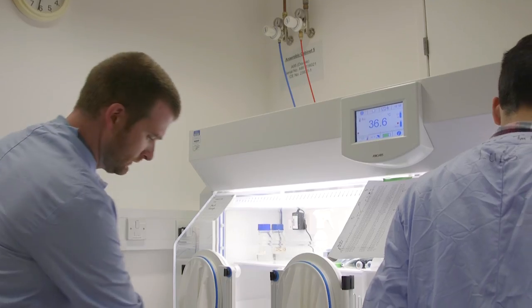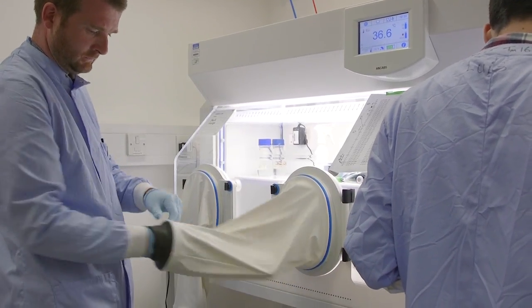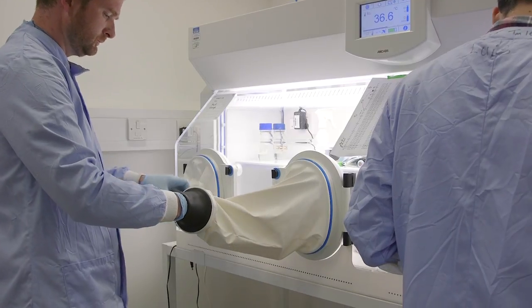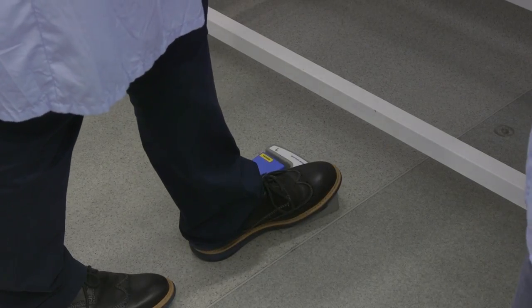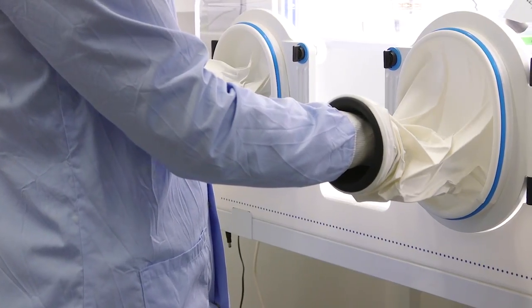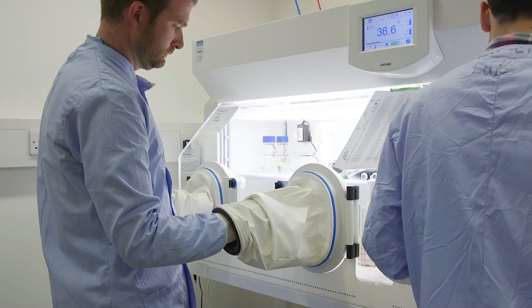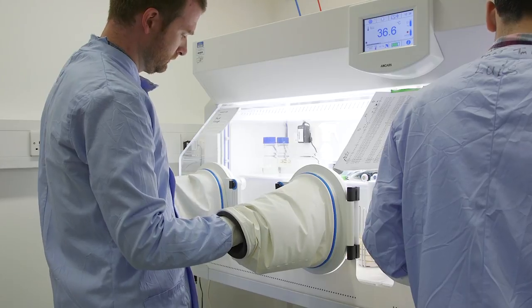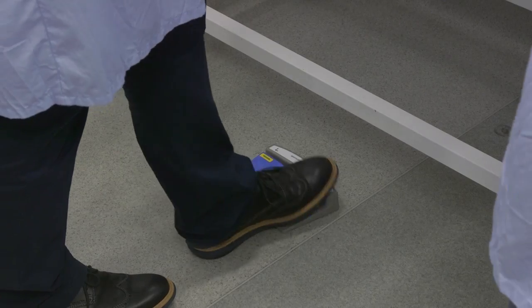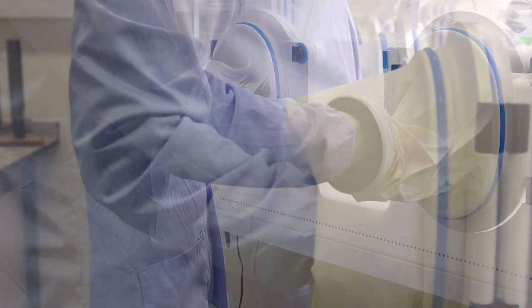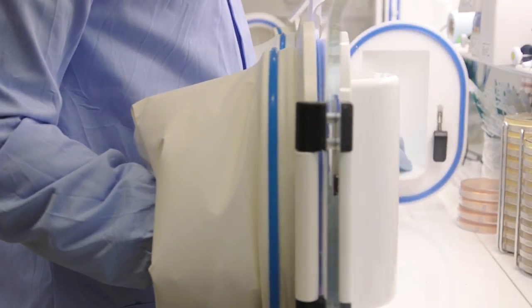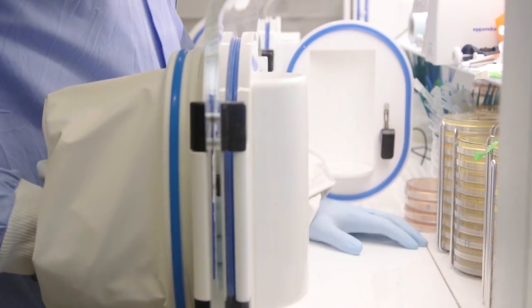The first thing I need to do is to enter the anaerobic cabinet. I place the sleeves over my arms and then by pressing these pedals I can suck all of the air out of the sleeves. The other pedal then blows more anaerobic gas into the sleeves. I repeat this process three times to ensure I have removed as much oxygen as possible before opening the doors and entering the anaerobic cabinet.